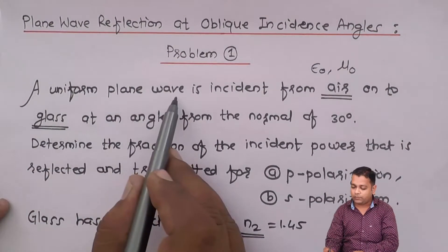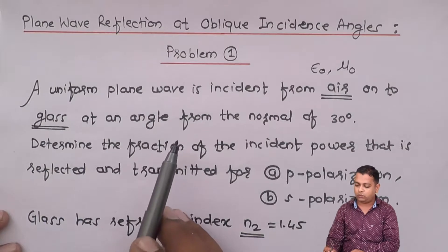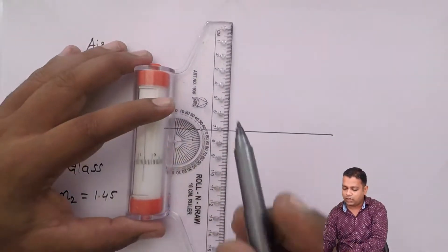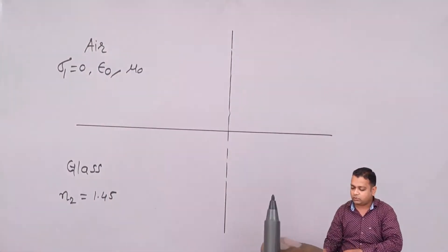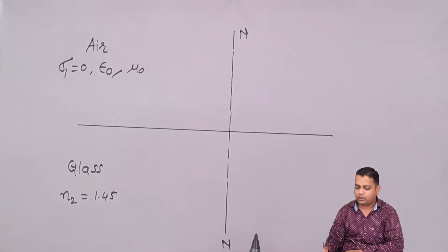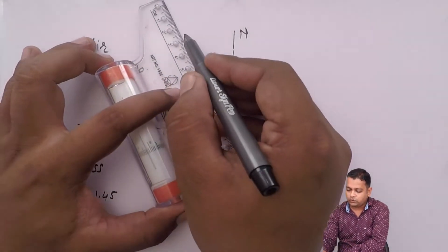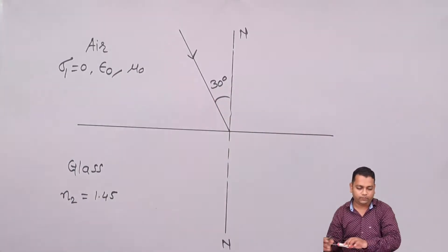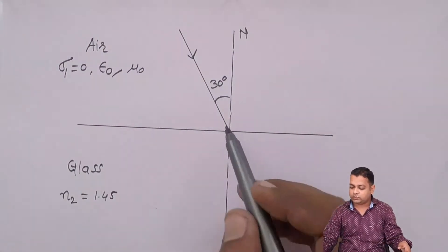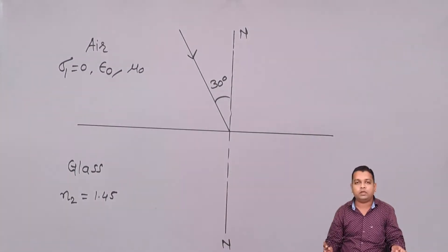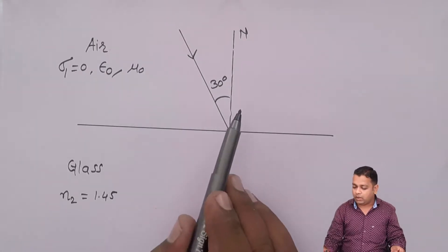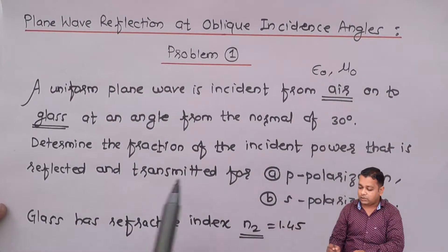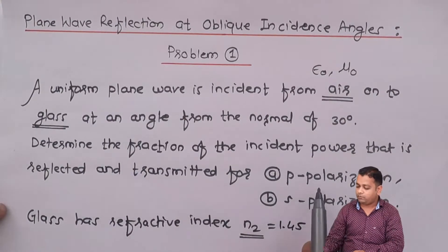We draw a diagram showing the boundary surface separating medium one (air) from medium two (glass). A line perpendicular to the boundary surface is drawn — this is the normal, denoted by the N-to-N line. The incident ray makes an angle of 30 degrees with this normal. We expect a portion to be reflected back and another portion to be transmitted into medium two, with corresponding angles of reflection and transmission. We are asked to determine the reflected and transmitted fractions for P polarization and S polarization.